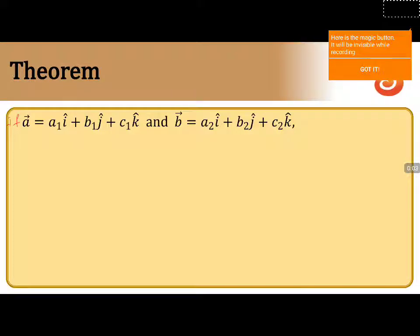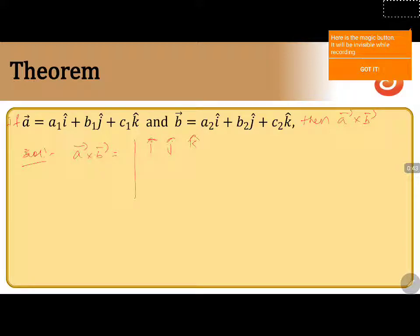If vector a equals a1 i-cap plus b1 j-cap plus c1 k-cap, and vector b equals a2 i-cap plus b2 j-cap plus c2 k-cap, then to find a vector cross b vector, we write the determinant with the first row as i-cap, j-cap, k-cap, the second row from vector a as a1, b1, c1, and the third row from vector b as a2, b2, c2.